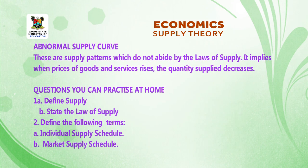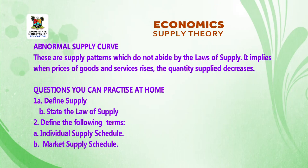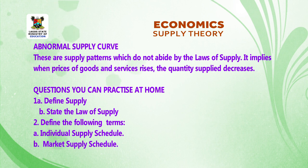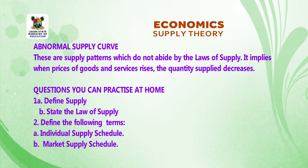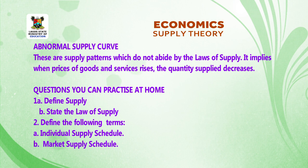Abnormal supply curve: These are supply patterns that do not abide by the law of supply. It implies that when prices of goods and services rise, the quantity supplied decreases.